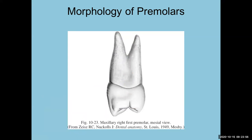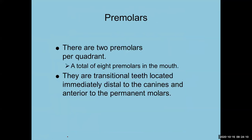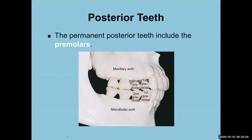The chapter will discuss all the premolars in order, then get into specifics. There are two permanent premolars per quadrant, and with four quadrants, there are a total of eight premolars in the mouth — two on the maxillary right, two on the maxillary left, two on the mandibular left, and two on the mandibular right. They're considered transitional teeth located immediately distal to the canines and anterior to the permanent molars.